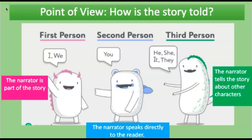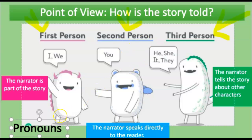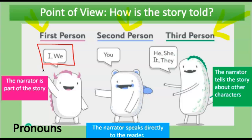So when we talk about point of view, typically we're talking about these terms: first person, second person, and third person. Have you heard those terms before? You can tell what point of view a story is told by looking at pronouns. Pronouns are short words that replace names. When a story is written from a first-person point of view, the narrator uses pronouns like I or we. We also see words like me, my, or our — so the narrator is part of the story.